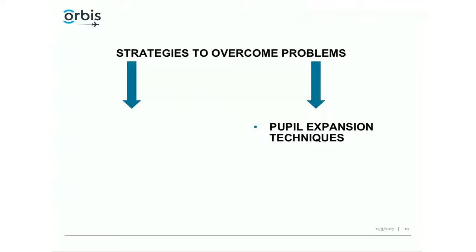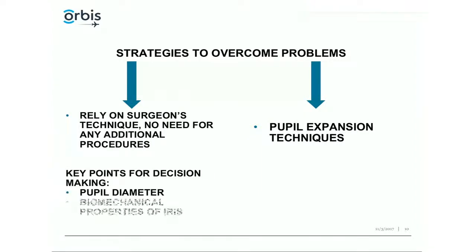The overall strategies are: one, go with pupil expansion techniques; two, rely on surgeon technique depending on expertise. Sometimes no additional procedures are needed, but when they are so easily available, there's no point in being heroic — it's someone else's eye. Key decision points are the pupillary diameter and the iris type. For example, a 4 mm pupil with a toric lens, or a 4.5 mm floppy iris eye, would both call for a pupil expansion device.